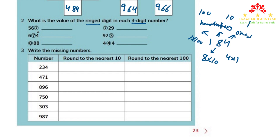We follow the same rules for the ringed digits in the three-digit numbers. The first ringed digit is 7 in the ones place, so its value is 7, or 7 times 1 equals 7. The second ringed digit is 7 in the tens place, so its value is 70, or 7 times 10 equals 70. The third ringed digit is 8 in the hundreds place, so its value is 800, or 8 times 100 equals 800.